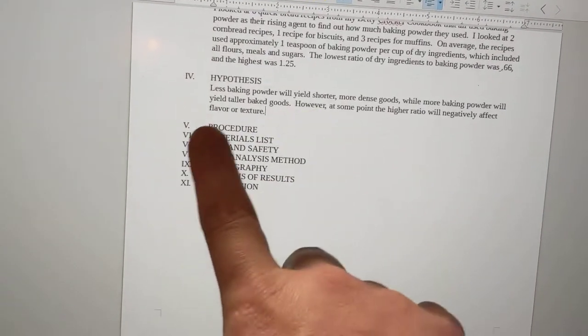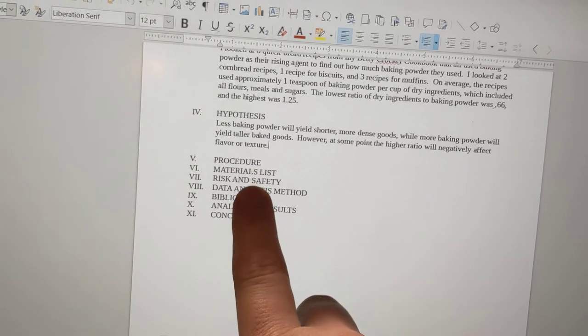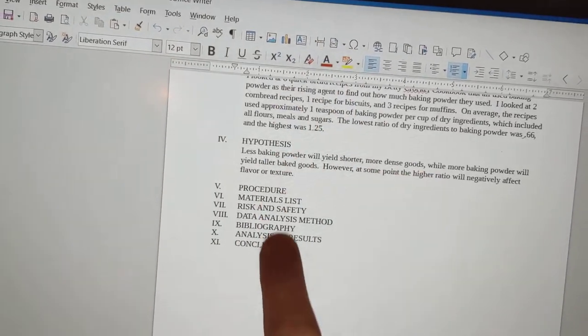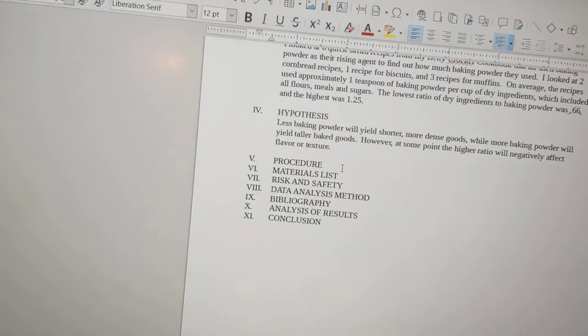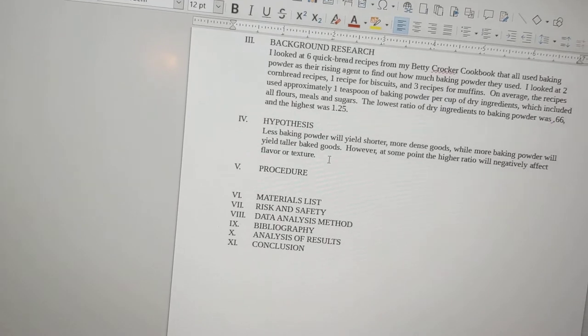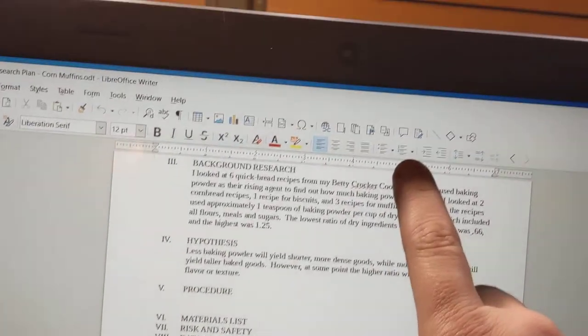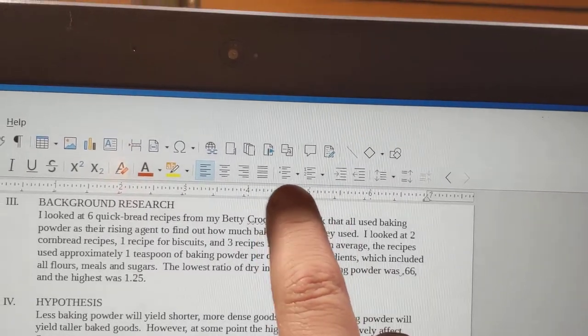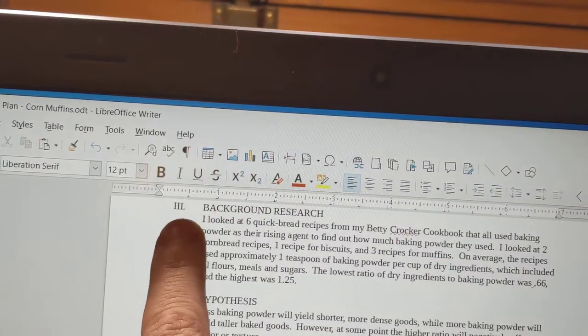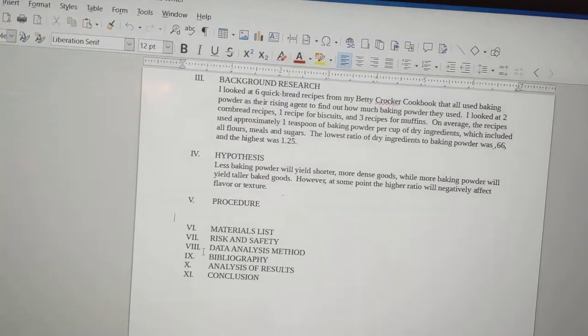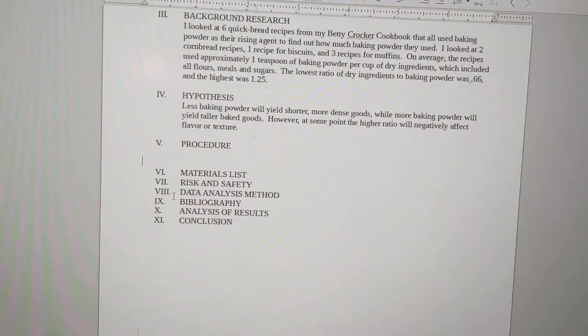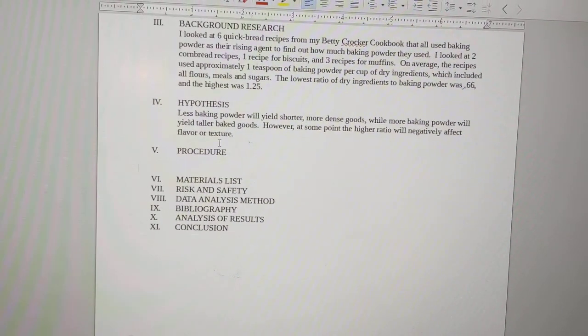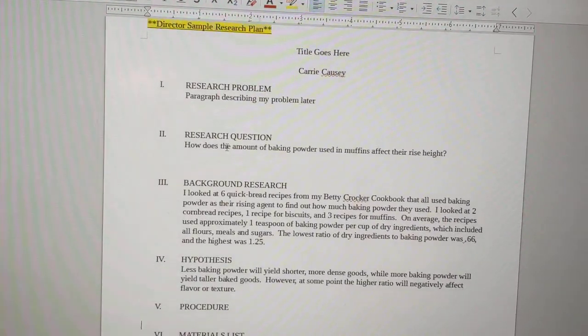I suggest putting in all of your Roman numeral title things that are required parts just all at once, because it's difficult later after you've done number four to go back in and add another one and have it start at number five for you. If you just put them all in together, then you'll be able to just make a space and write in whatever you need to write in. And these will keep their numbers. So I suggest that you just, you're going to go up to your bullets, bullets and numbers, whatever your program has. This is LibreOffice, but it's really similar to Microsoft and everybody else. You're going to go down to there. You're going to tell it that you want to use Roman numerals, and then you're just going to add in all your titles and these are all in your guide and it's all on the research plan sample.